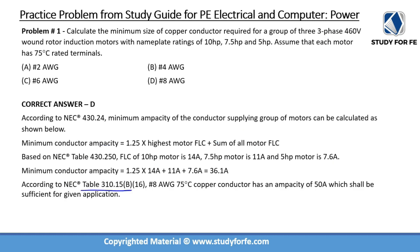According to NEC table 310.15(B)(16) — the table we discussed during conductor sizing — we look at the 75-degree-rated column and need a copper conductor. A number 8 AWG copper conductor with 75-degree C rated insulation has an ampacity of 50 amps, which is sufficient for this application. Going any lower would not satisfy the 36.1-amp requirement.